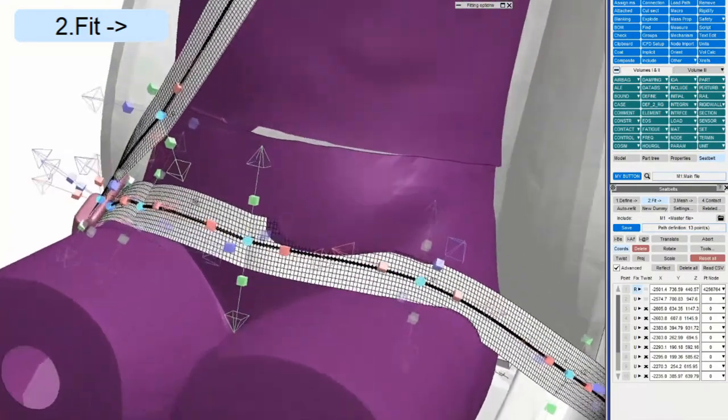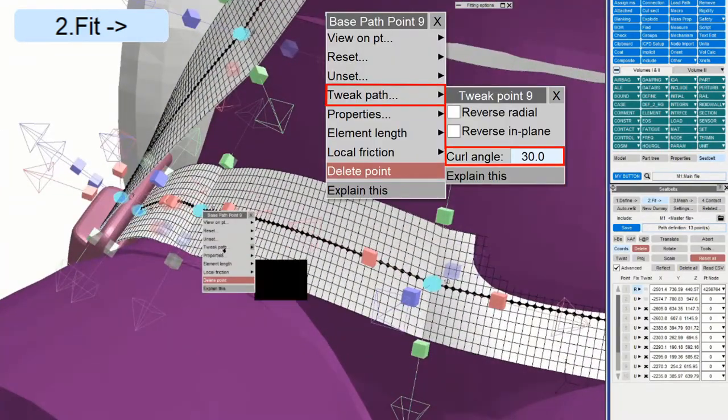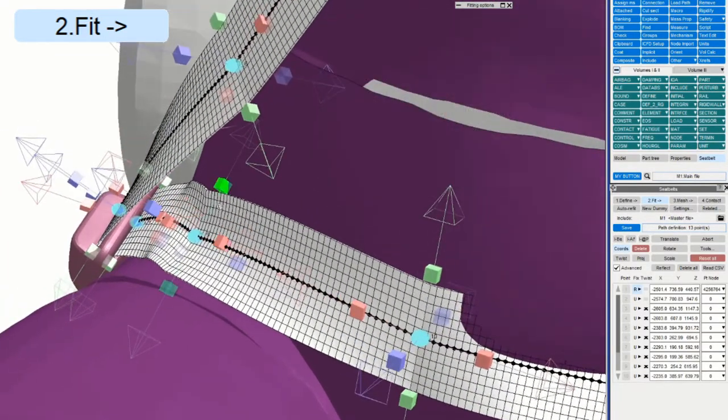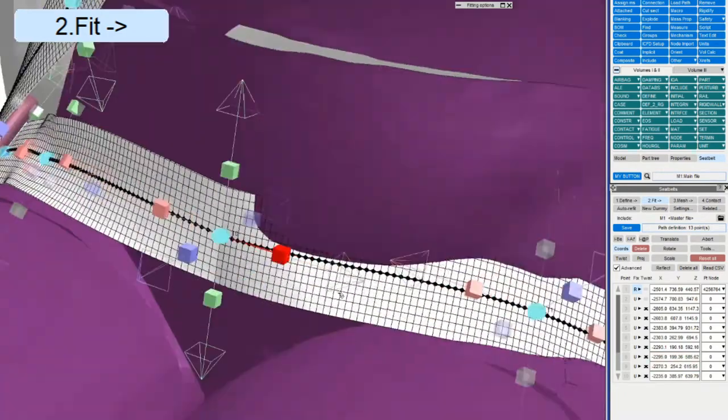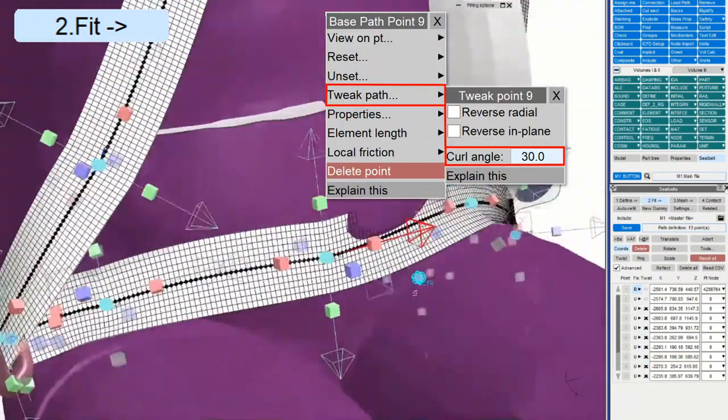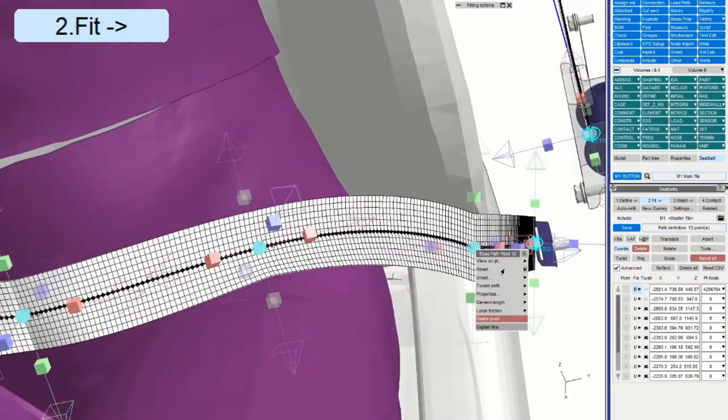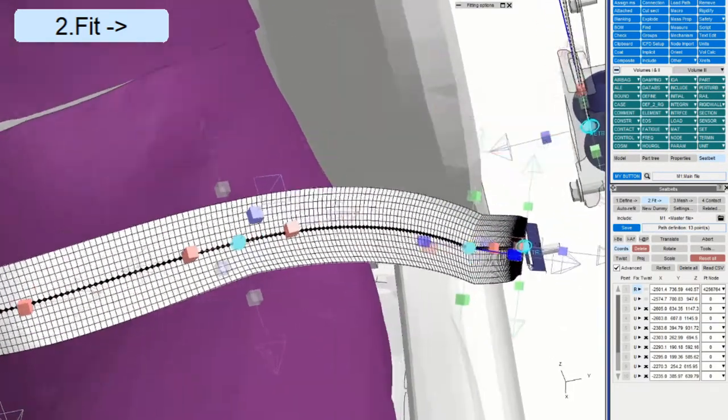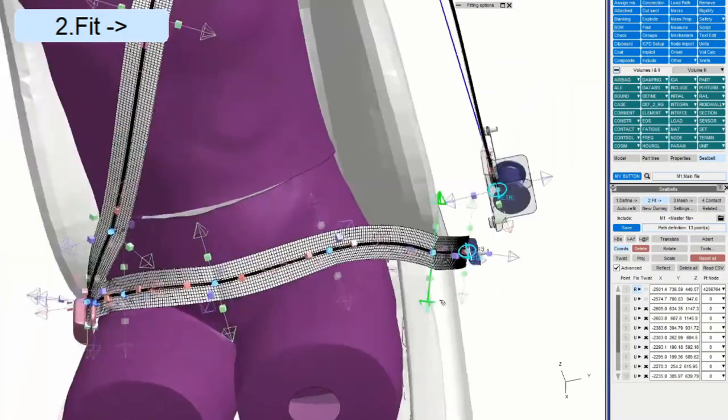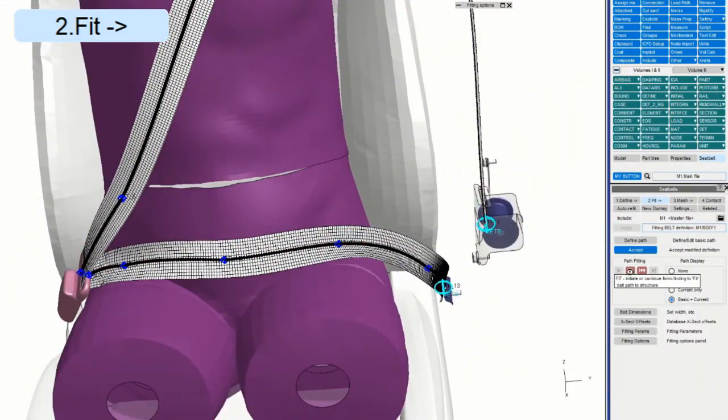To help the belt fit over the lap, we can tweak the points and set curl angle. This adds curvature to the belt, letting us get closer to the final shape. Here, we set the curl angle in three locations, two on the lap and one next to the seat. A final tweak to remove penetration, and we have a well-fitted belt.